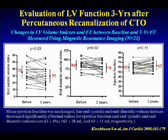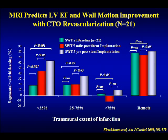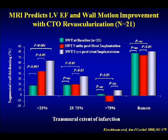Regarding LV function: a Netherlands study using MRI at baseline, five months, and three-year follow-up in 21 patients measured ejection fraction and wall thickness. There was a trend toward improvement in ejection fraction with successful recanalization. More importantly, segmental wall thickness improved significantly when there was less than 25% transmural MI. Even in patients with 25–75% transmural MI, there was no benefit at five months, but significant improvement in segmental wall motion thickness at three years. More than 75% transmural MI showed no significant benefit.